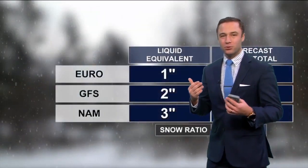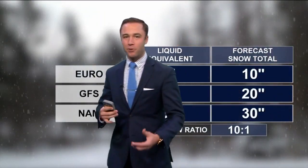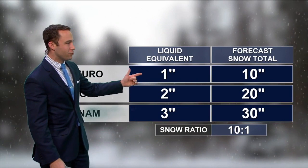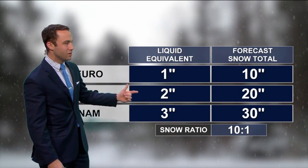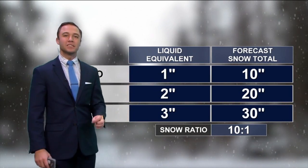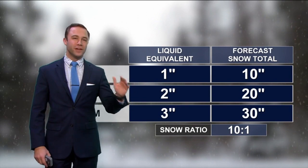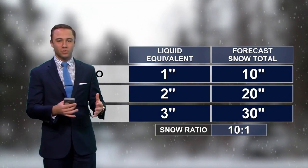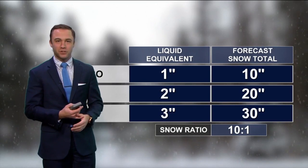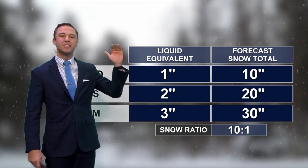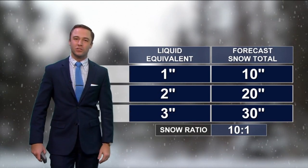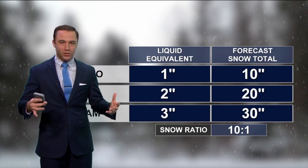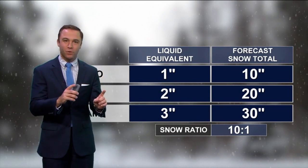It starts to get really tricky when you put in different model forecasts. Let's say one model has an inch of rain, another model has 2 inches, another has 3 inches. If we were to tell you, in the middle of spring, 1 to 3 inches of rainfall — if it rains 2 inches, you're not really going to notice a huge difference. But if we say 10 to 30 inches of snowfall, that's a gigantic difference in snowfall forecast. But that's what we're dealing with.